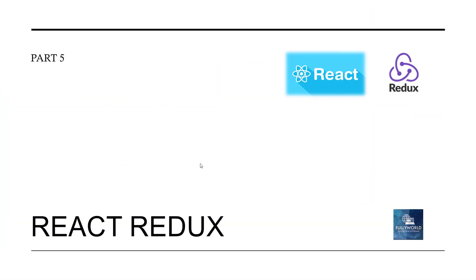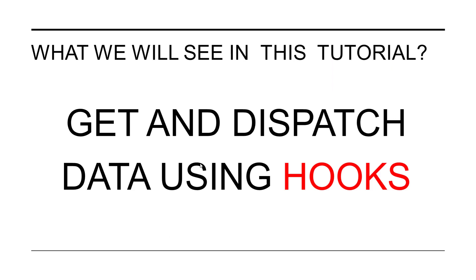Welcome, this is Rameshama here and we are watching the React Redux series. This is part five of this series. In this part we are going to see how we can get and dispatch data using hooks. We are going to modify the same code that we created in the previous part, so if you haven't watched the previous part, please watch it first because we are going to modify that code to use hooks.